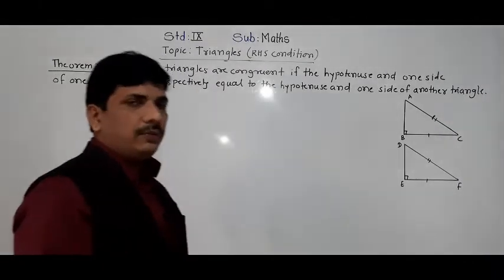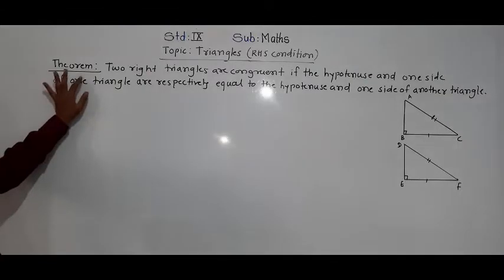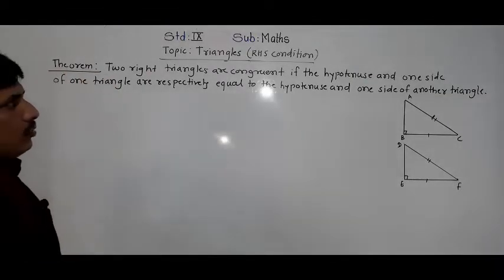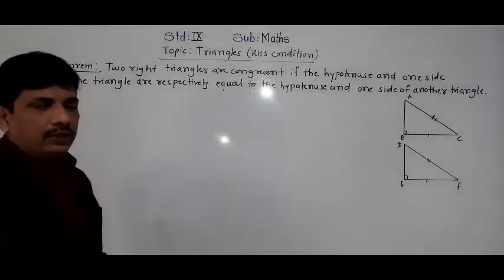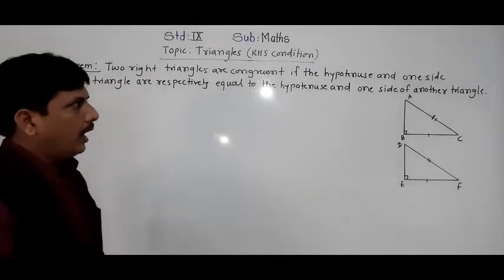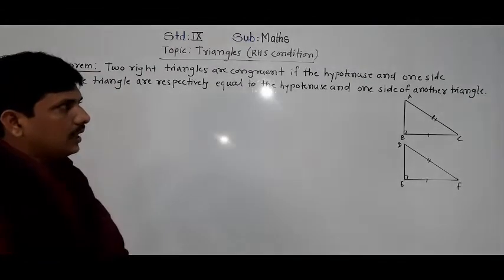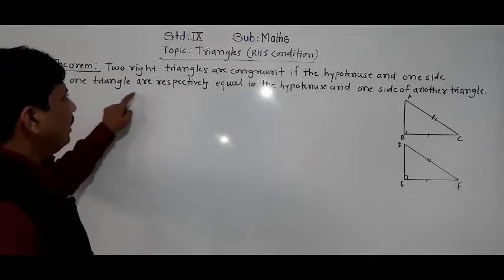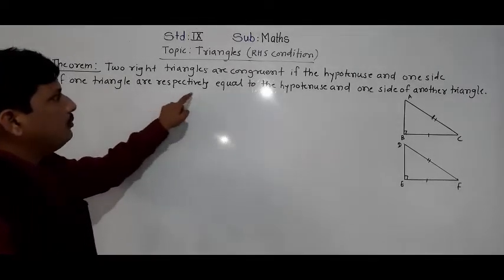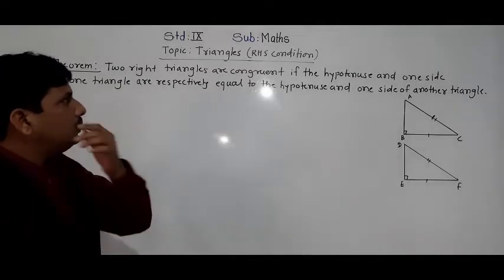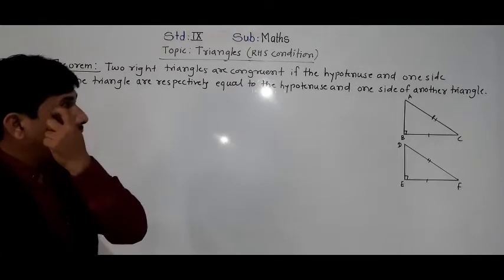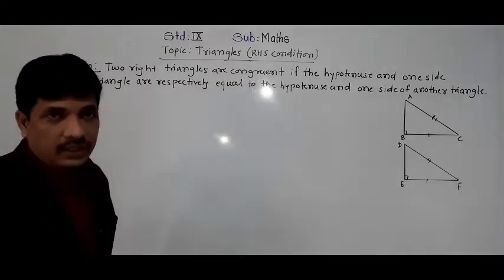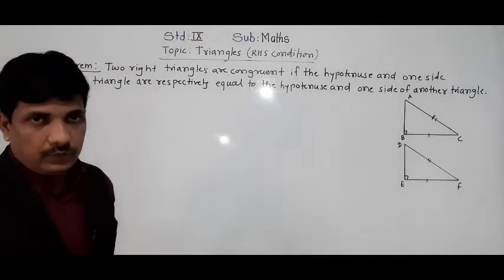So, the statement is given: two right triangles are congruent if the hypotenuse and one side of one triangle are respectively equal to the hypotenuse and one side of another triangle.